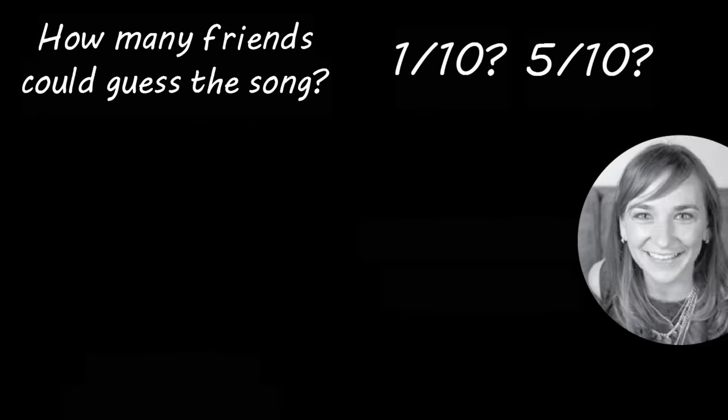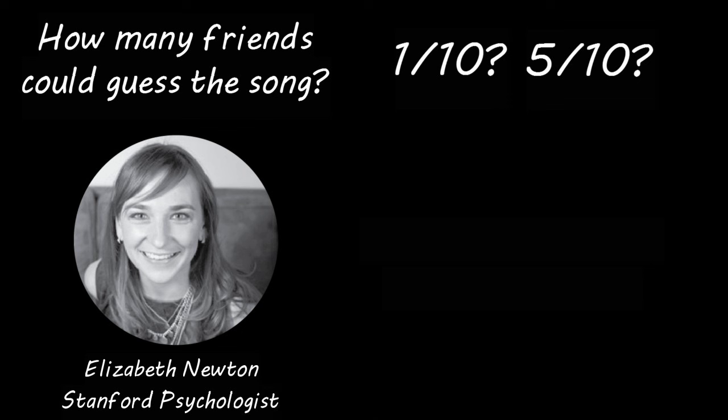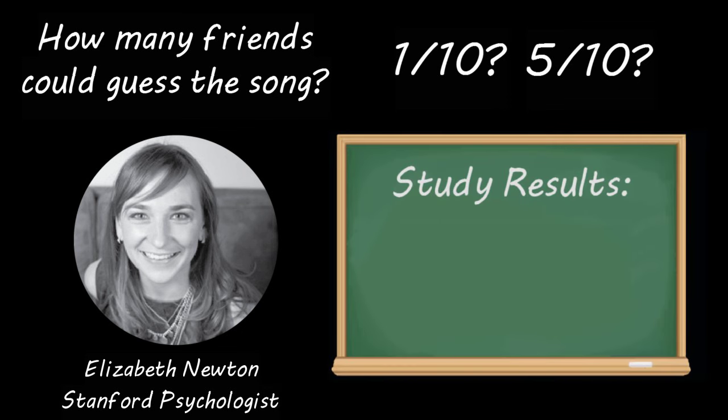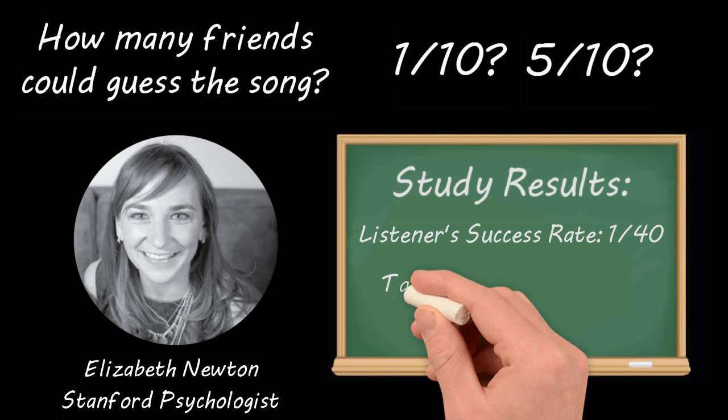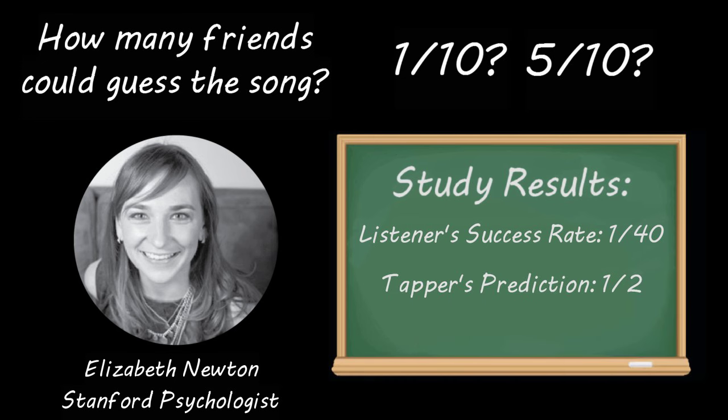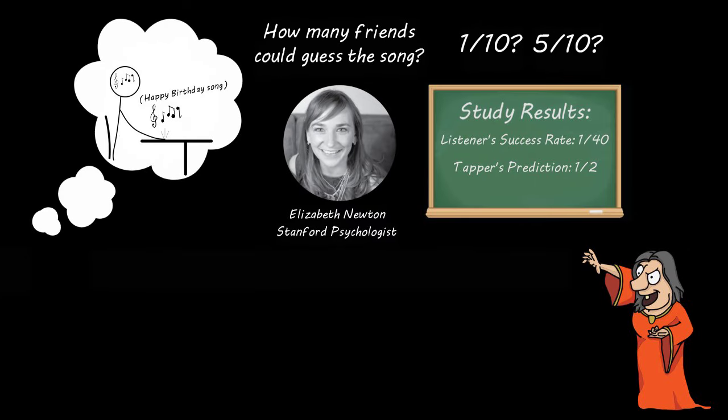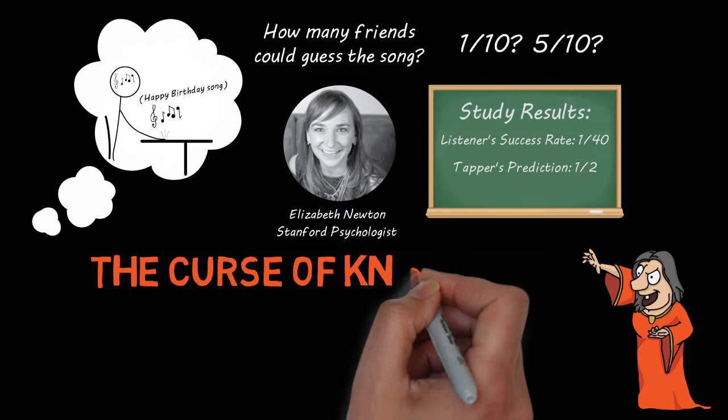In 1990, psychologist Elizabeth Newton played this game with students at Stanford University. Her findings were startling: only one in 40 students could guess the famous song that the tapper was tapping. But here's the troubling thing: the people who were tapping out the songs thought that at least half the people would guess the song. Because the tappers knew the song and had it playing in their head, they expected many more people to understand what song they were trying to communicate. This is what psychologists call the curse of knowledge.